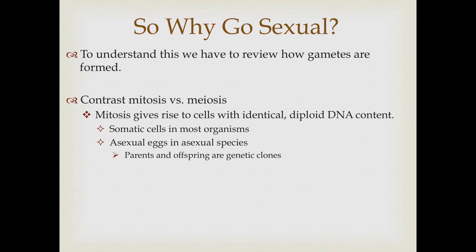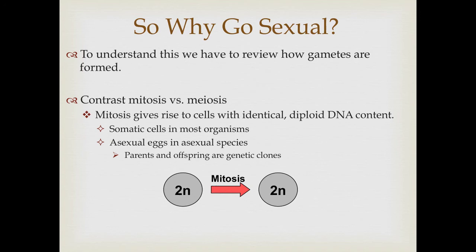So why do most animals reproduce sexually? To understand this, we need to review how gametes are formed — looking at mitosis versus meiosis. Mitosis produces 2N cells with identical diploid DNA content, happening in all somatic cells — skin cells, liver cells, and all body cells. This is also how eggs are produced in asexual organisms, where parents produce offspring that are genetically identical clones via mitosis.